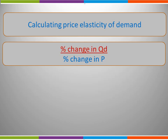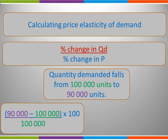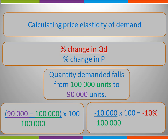Let's start by calculating the top line of our formula — the percentage change in quantity demanded. The quantity demanded was going to fall from 100,000 units to 90,000 units. So the first thing we do is calculate the difference: 90,000 minus 100,000, divided by the original of 100,000 units, before multiplying by 100. This gives us a percentage change in quantity demanded of minus 10%.